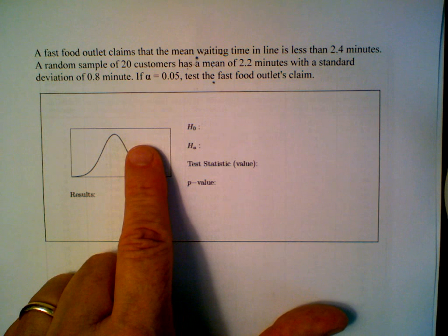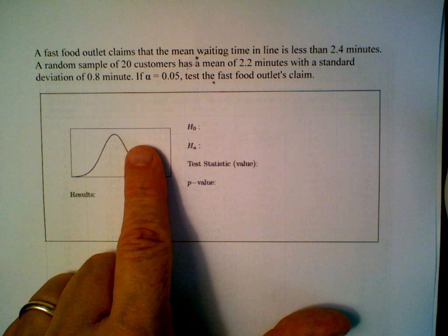A random sample of 20 customers has a mean of 2.2 minutes with a standard deviation of 0.8 minute. If alpha equals 0.05, test the fast-food outlet's claim.